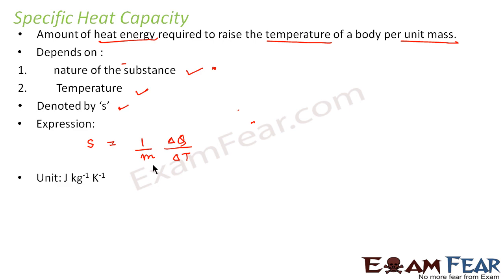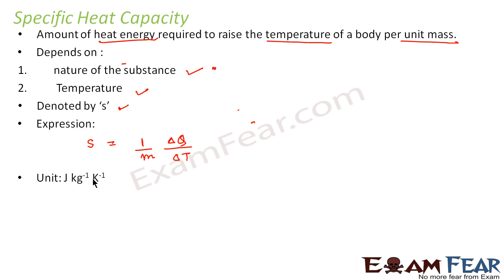So s, that is specific heat capacity, is equal to 1 by m times delta Q by delta T. With this expression you can see that the unit will be joule per kilogram per kelvin. That is because the unit of mass is kilogram, so it will be kilogram inverse; delta Q is in joules and temperature is in kelvin — so joule per kg per kelvin.